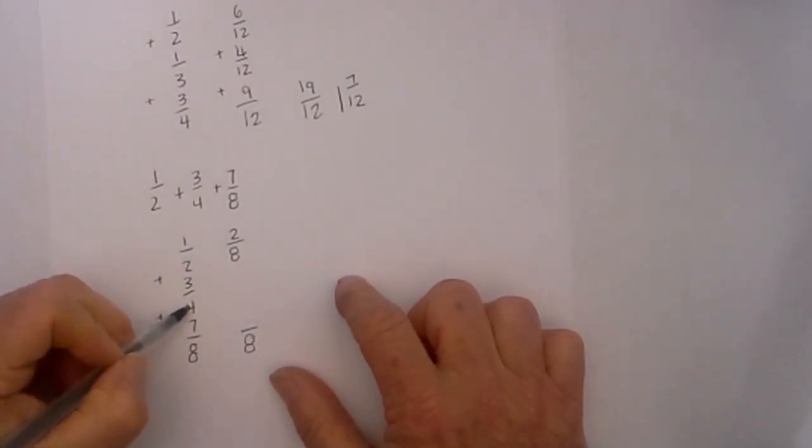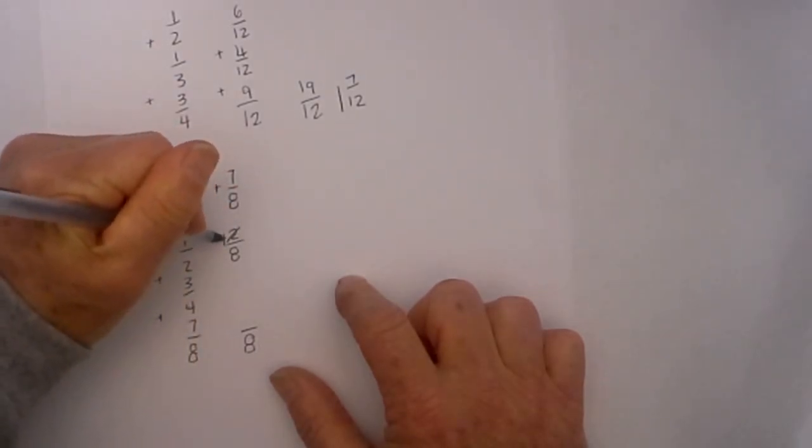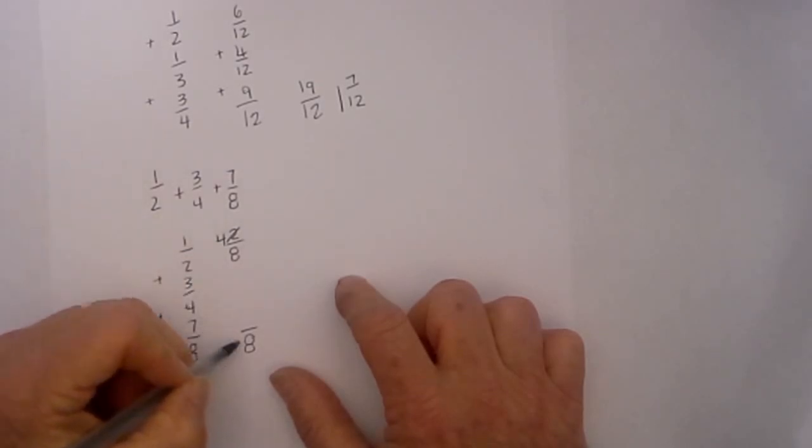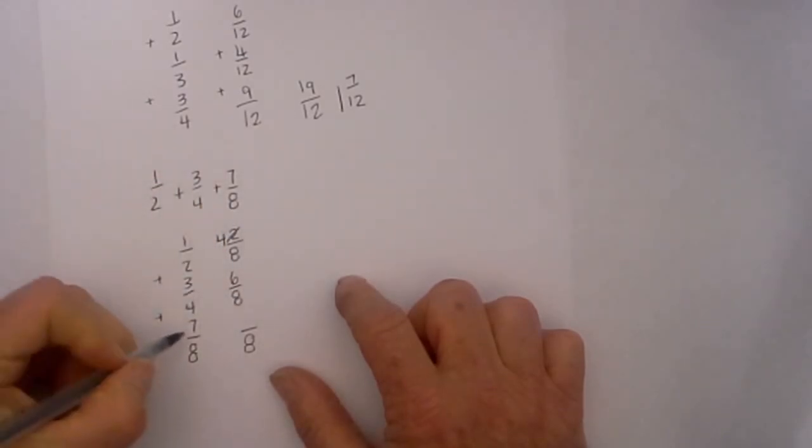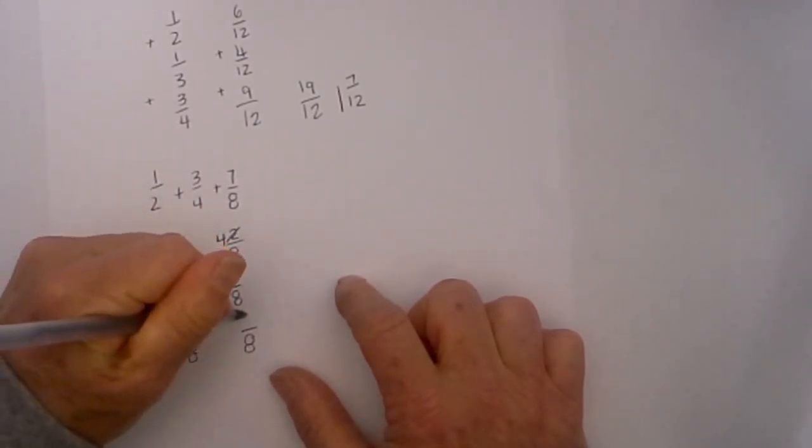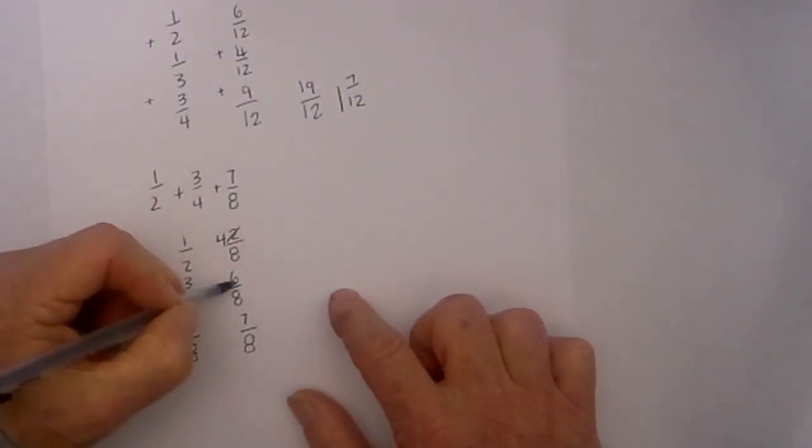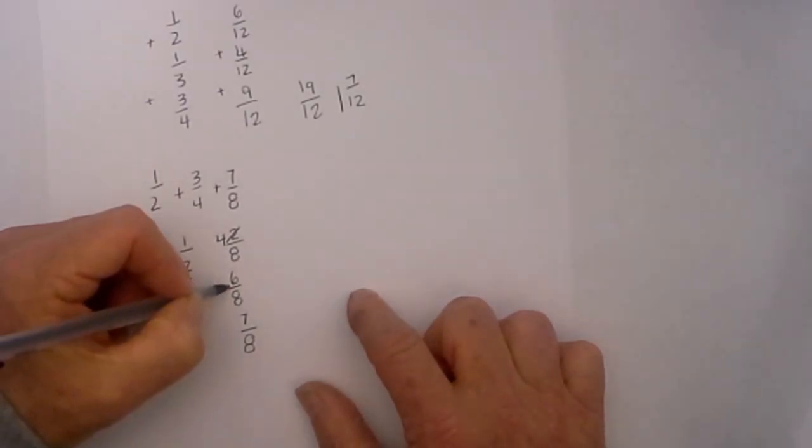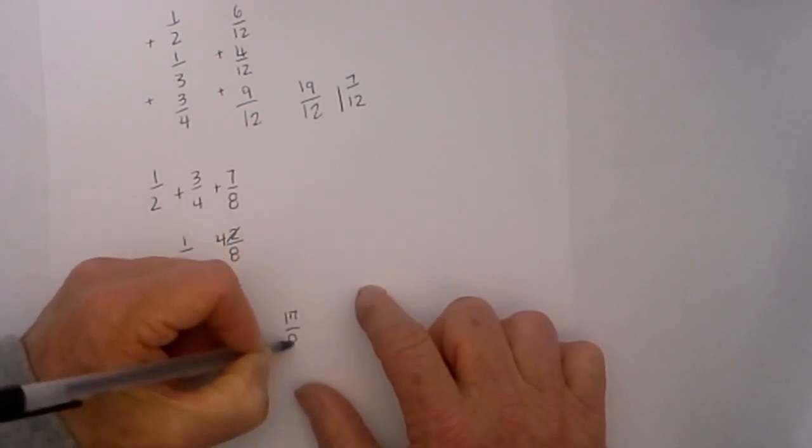Four goes into eight two times, so that will be six eighths, and then eight goes into eight one time, so I have seven eighths. So now I have four eighths plus six eighths plus seven eighths, which equals four plus six is ten plus seven, that will be seventeen eighths.